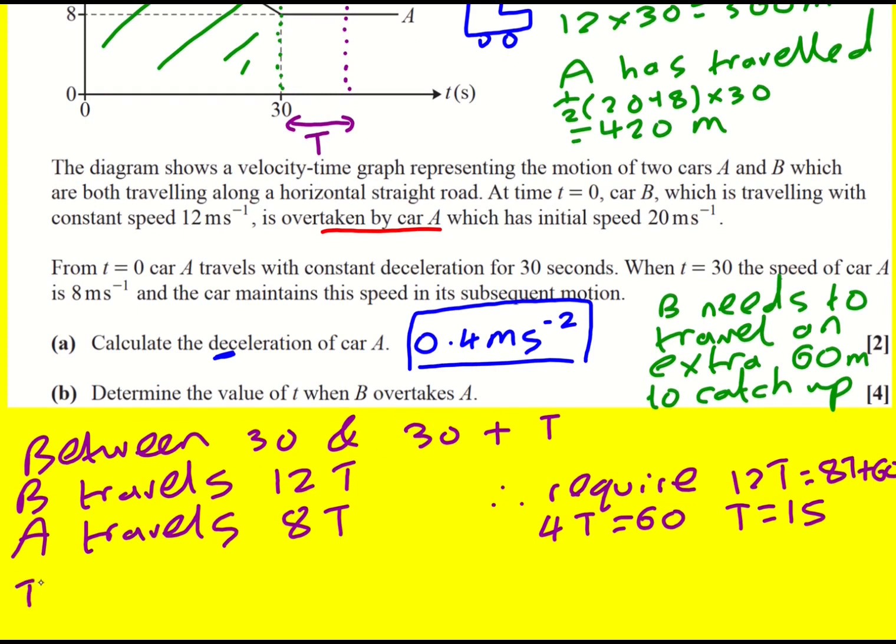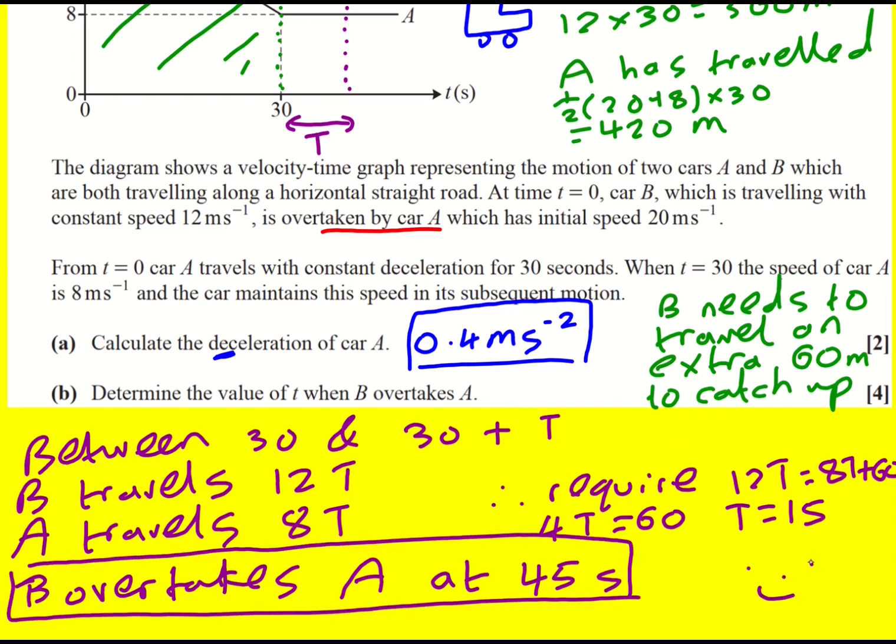So B overtakes A at 30 plus this 15, which is 45 seconds. Nice, all right.